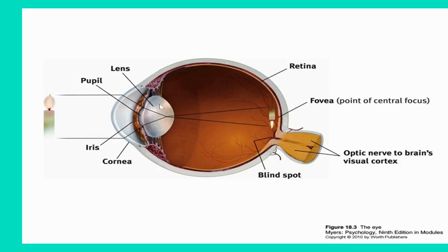If the pupils are smaller, the image that it casts on the back of the eye is going to be smaller. If the pupils dilate and get larger, the image that it's going to cast is going to be much larger on the retina. Really, depending on how big that opening is in the pupil will determine how much area of the retina is going to be covered by each part of the image.